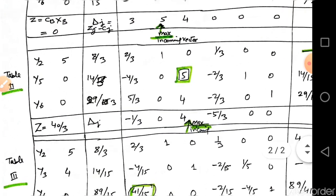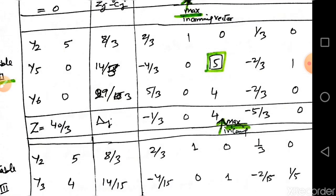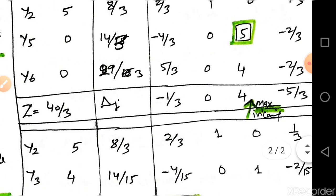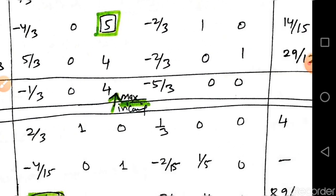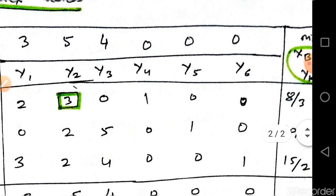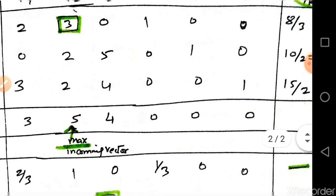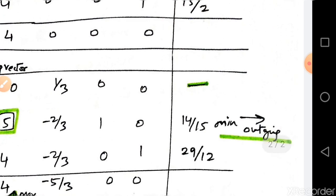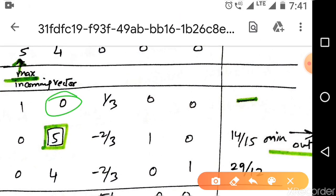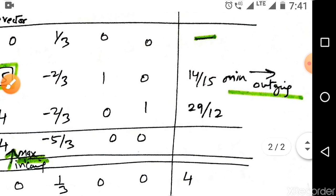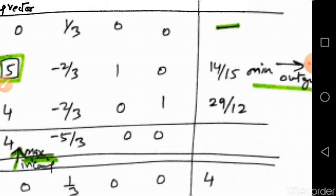In Table 2, calculate Z: 5 times 8/3 gives Z equals 40/3. Now calculate delta_j and choose the maximum, which is 4, meaning x3 enters the basis. Calculate minimum ratios; put a dash where y_k equals 0. The remaining ratios are 14/15 and 29/12.